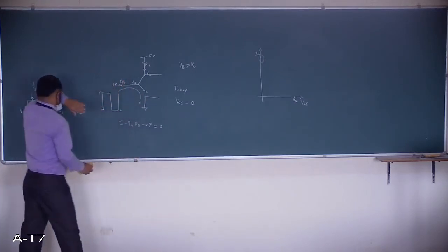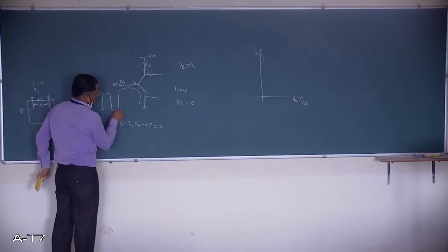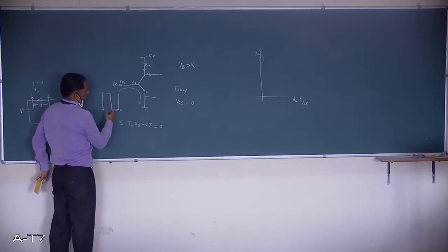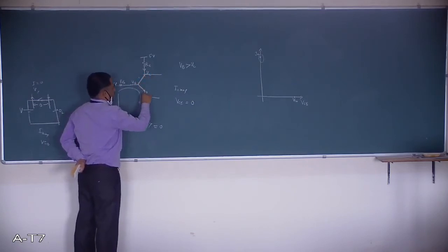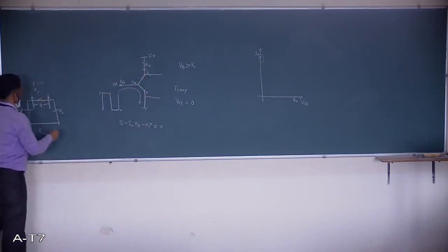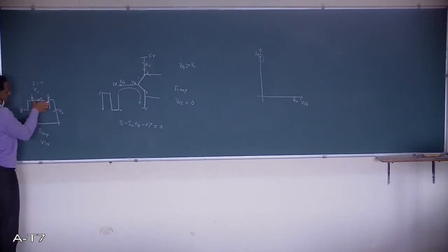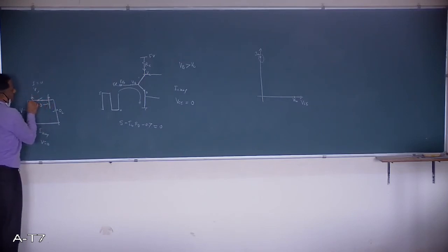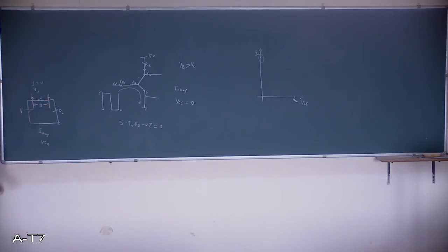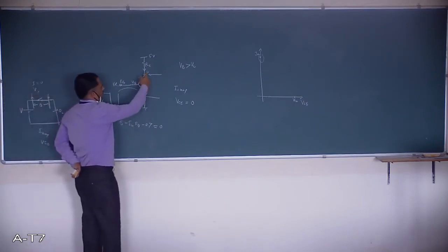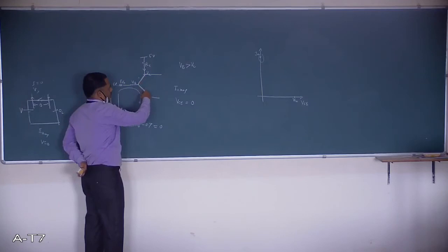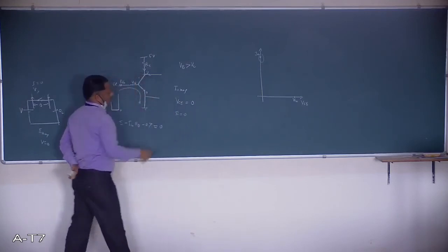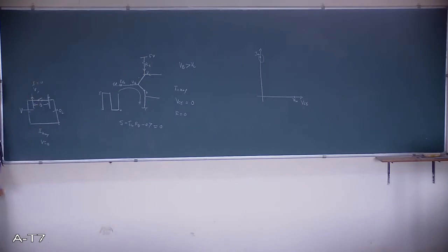One important parameter: when the switch is ON, what resistance does it offer? Theoretically, the resistance across the switch is zero — there is no opposition offered. Both junctions are ON and the resistance across the device is zero.